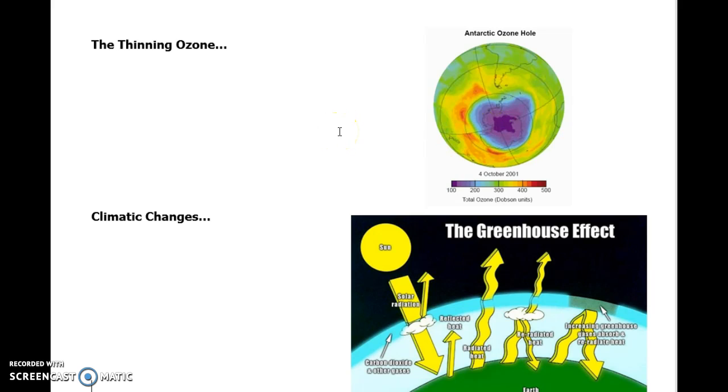Ozone is actually O3. That's the chemical formula. So oxygen is O2. Ozone is O3. It is a renewable source. You can actually, it will be made, it will be replenished, but we are just depleting it at a higher rate than it can be replenished. So it's thinning.